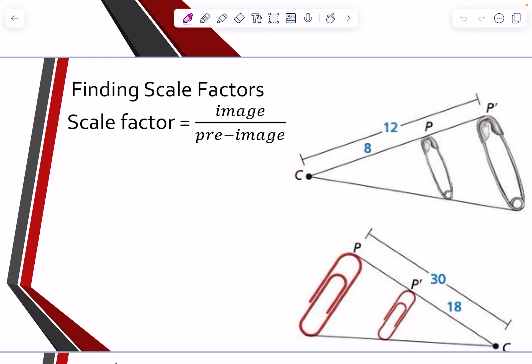So if we look, what is the scale factor here? One way to kind of think about it is my original, my pre-image is this part right here, to P. But then my image goes from C to P prime. So when you think of that, if you look at those two again, you have here to here.